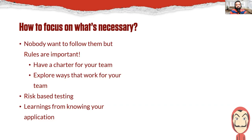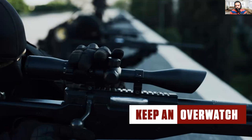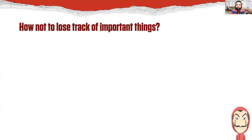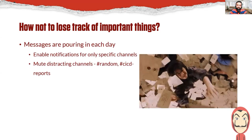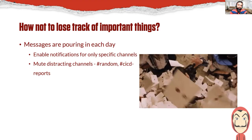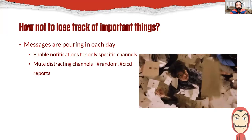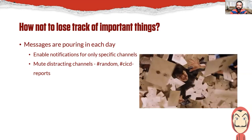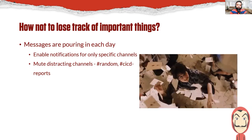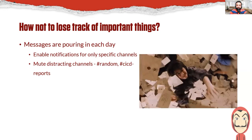After focusing on what's necessary, the next lesson is keeping an overwatch. The professor had a lot of outside help keeping an overwatch on the team and the police — people here and there keeping them informed on what was really happening. How you can avoid losing track of important things: there are a lot of messages, emails, Slacks, and DMs coming through all day, so enable notifications for very specific channels and mute distracting channels like random or Jenkins reports — unless you're responsible for them.